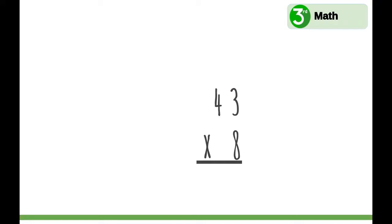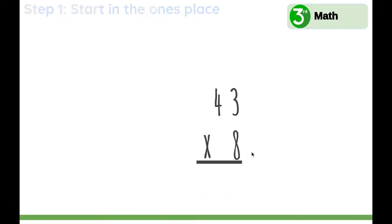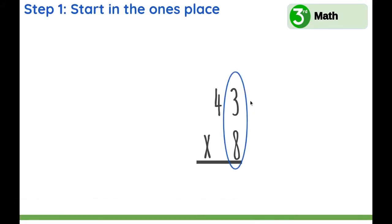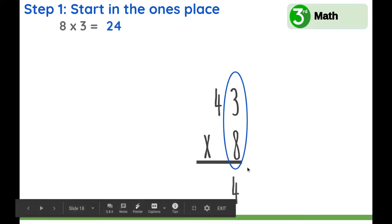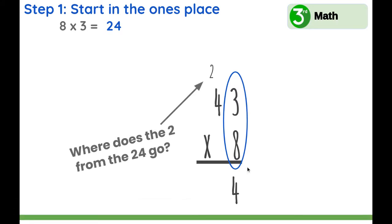Let's do another: 43 times 8. Notice how the ones place is lined up — that's where we'll start. Let's multiply 8 times 3. What is 8 times 3? 24. So let's leave the 4 in the ones place. And where does the 2 from the 24 go? To the tens place.